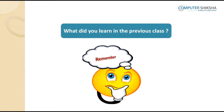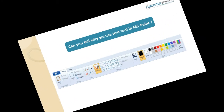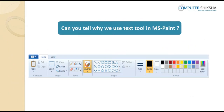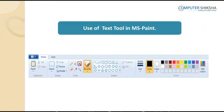Can you tell what you learned in the last class? In the previous class, you learned about the text tool. Can you tell why we use the text tool in MS Paint? We use the text tool in MS Paint to be able to type or write something.